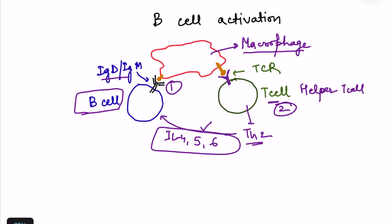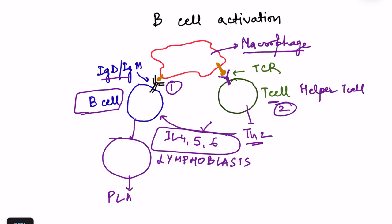Once activated, B cells enlarge in size and form lymphoblasts, which further differentiate into plasmoblasts. The cell is increasing its ability to secrete antibodies, so the organelles required for protein synthesis increase in number, and cell size increases to accommodate them. Lymphoblasts → plasmoblasts → and finally plasma cells are formed.